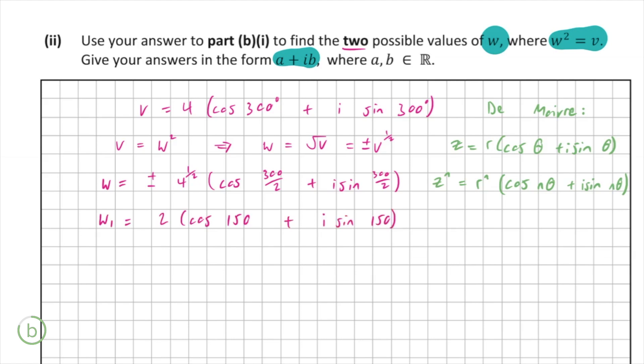So w is equal to the positive or negative value of 4 to the power of a half times cos 300 over 2 plus i sine 300 over 2. So we're going to call w1 for the first value of w, 2 which is the square root of 4, cos 150 plus i sine 150, and w2, which is the negative case, minus 2 cos 150 plus i sine 150. So now we're just going to simplify that. It can be done very easily on the calculator. Just plug in 2 cos 150, and the value will be minus root 3. Do the same thing for i, and you're going to get plus i. And you can also very easily do the same thing for w2, just watch now for the minus sign, but that will equal root 3 minus i.